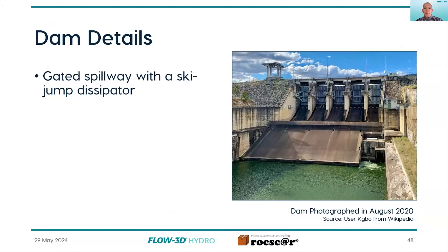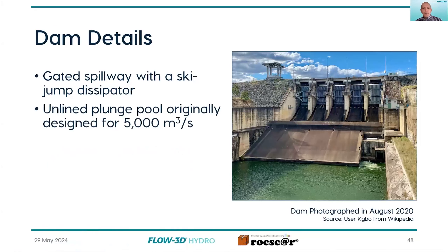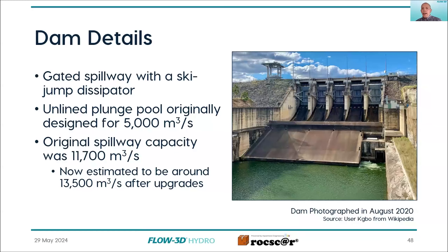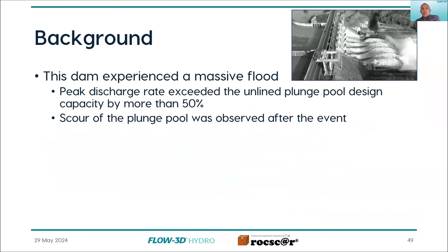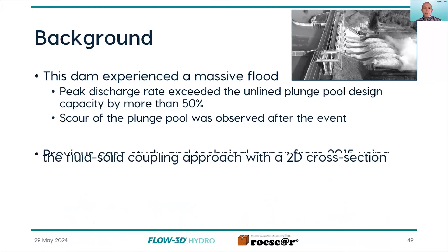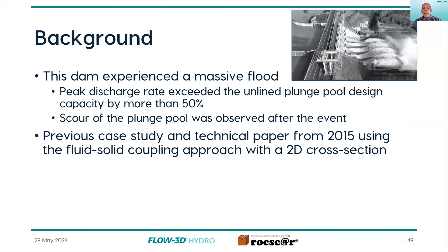The dam details: it's a gated spillway with a ski jump dissipator. It has an unlined plunge pool, and its capacity now to pass flow is much greater than what that plunge pool was designed for. This dam experienced a big flood that exceeded that design capacity, and some scour of the plunge pool was observed. The dam itself was never under any threat — it was just some scour of the downstream section. Eric had previously done a paper on the same dam, just looking at a simplified 2D coupled model along a cross-section.